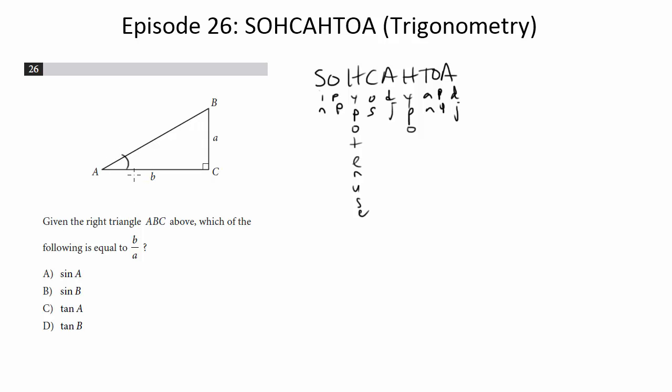So sine of A. So here's A. Sine is opposite over hypotenuse. Now notice it's going to be A over whatever this is. We don't even have a value for this. So it doesn't seem like this is going to work because we need it to be B over A.